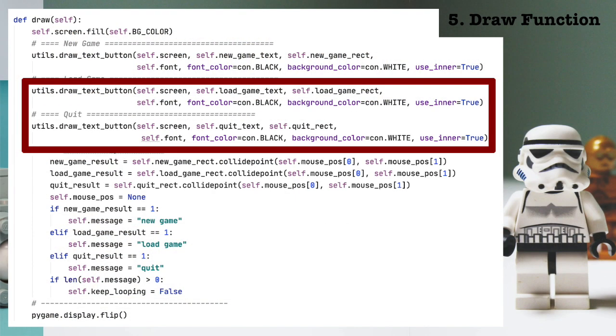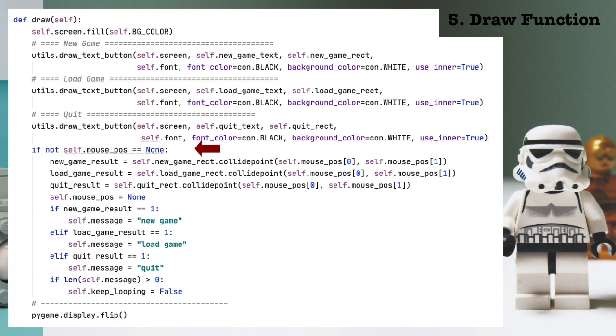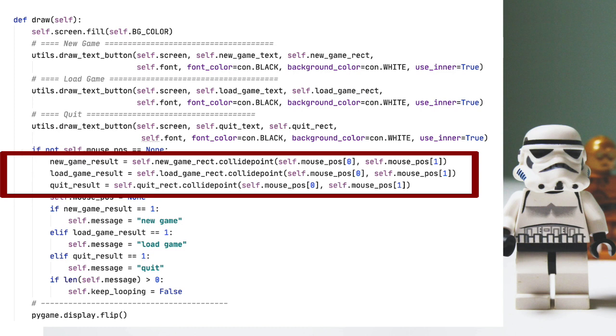5C, back to the draw function. 5D, now let's analyze the input. Since the next two calls to draw text button work the same way, I won't go over them. Now notice the line, if not self mouse position equals none. So what we're interested in is the case in which mouse position contains some value. So if we've clicked something, we need to see if we clicked on a button or we just clicked on the background window. We do this by testing each button in turn. New game result will tell us whether or not the new game button was clicked, and if it was clicked, new game result will contain a 1, and if it wasn't clicked, new game result will contain a 0.